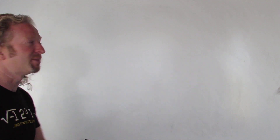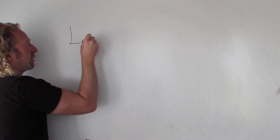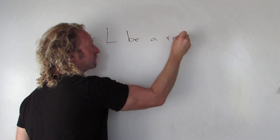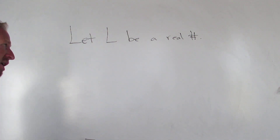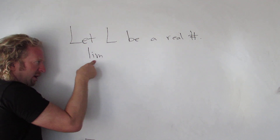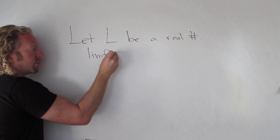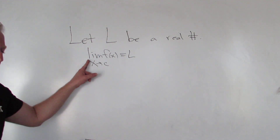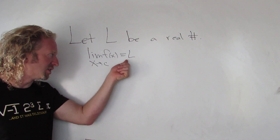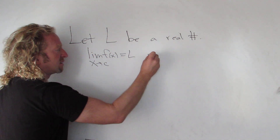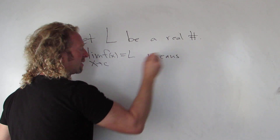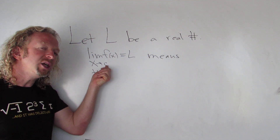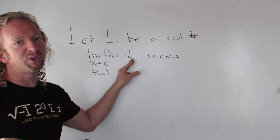In this video we're going to talk about the notation behind limits. So let big L be a real number. This is the limit notation: the limit of f of x as x approaches C is equal to L. This means that whenever x gets really, really close to C, f of x gets really, really close to L.